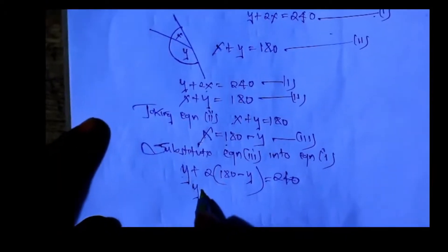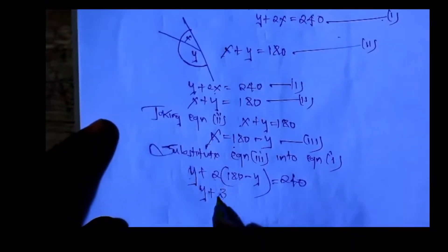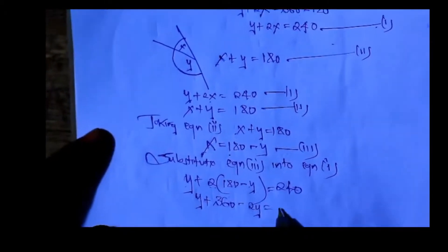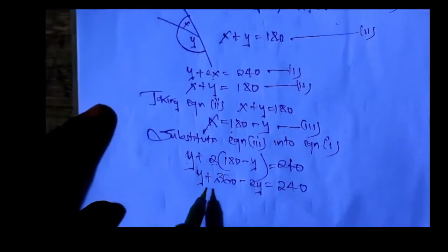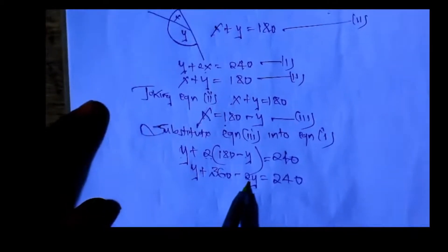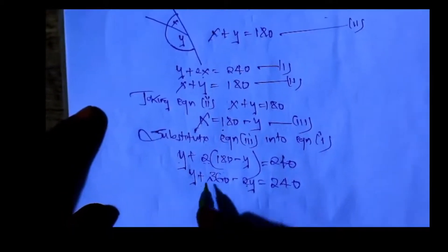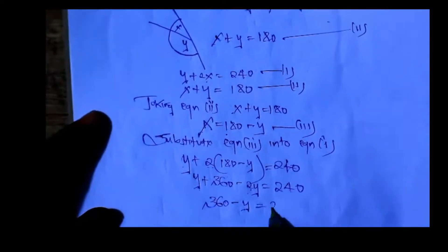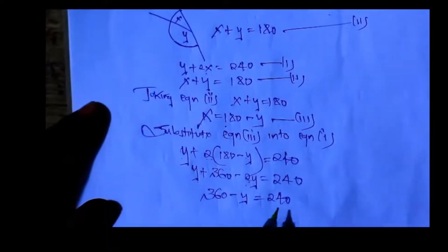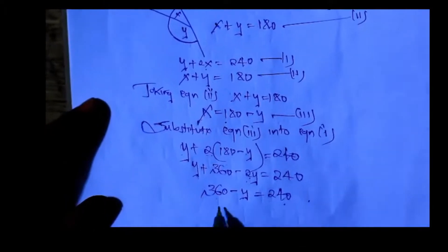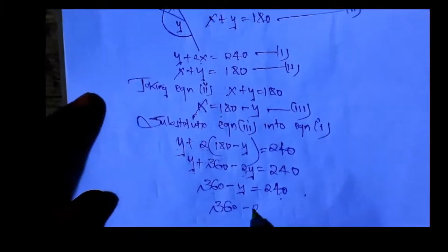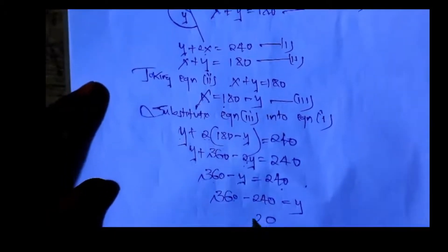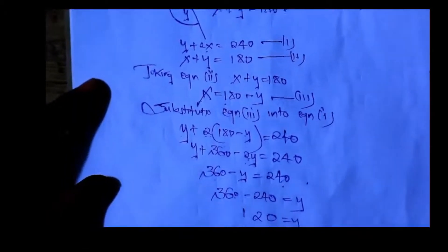Opening up the bracket, we get: 136 minus 2Y plus Y equals 230. Simplifying: 136 minus Y equals 230. Moving terms: Y equals 136 minus 230, which gives us Y equals negative... so Y equals 21 degrees.